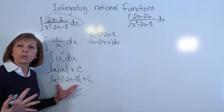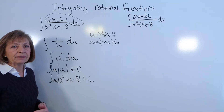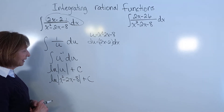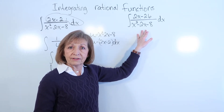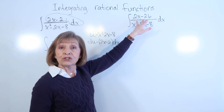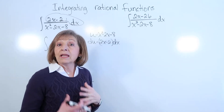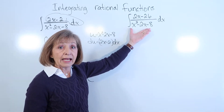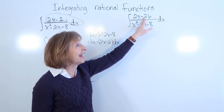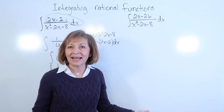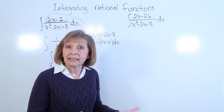That was one of the beginning types of integrating rational functions using u-substitution. The next example looks very similar: the integral of (2x minus 26) over (x squared minus 2x minus 8) dx. If I try grabbing the entire denominator, du would be (2x minus 2) dx, but I have (2x minus 26) dx — that constant term doesn't match, so I won't be able to directly do that u-substitution.